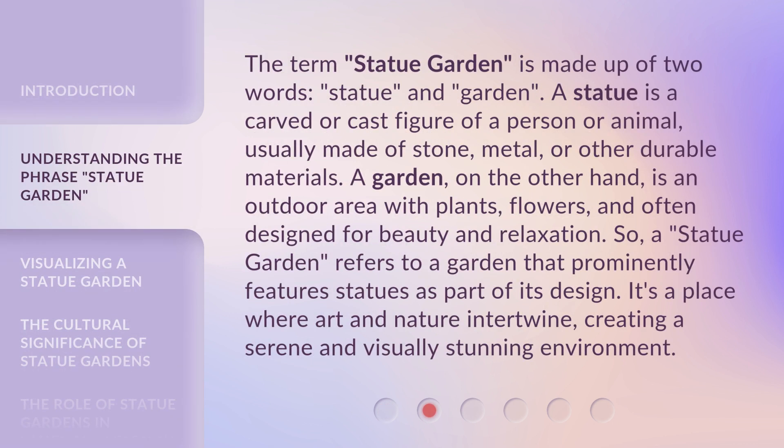The term 'Statue Garden' is made up of two words: statue and garden. A statue is a carved or cast figure of a person or animal, usually made of stone, metal, or other durable materials. A garden, on the other hand, is an outdoor area with plants, flowers, and often designed for beauty and relaxation.